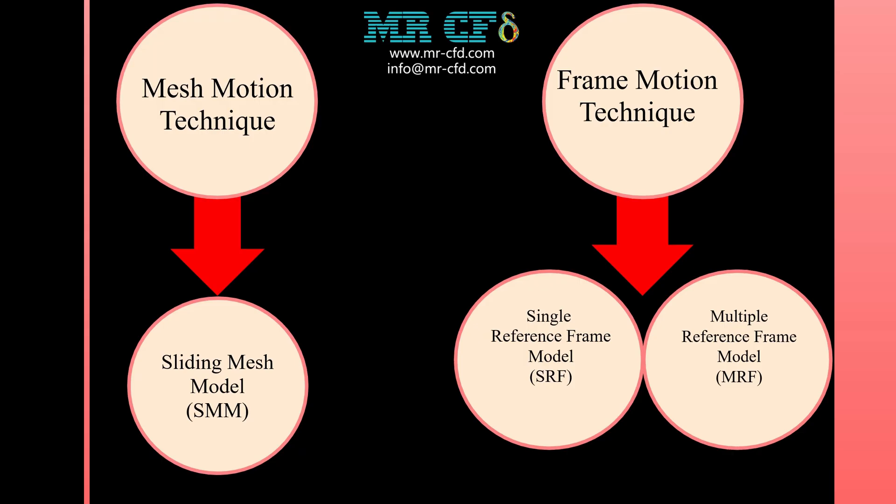The two most important computational methods for simulating rotary turbo machines are frame and mesh motion techniques. The frame motion technique is categorized into two submodels — SRF and MRF — which are more economical in terms of computational cost than the mesh motion technique. However, the downside is that inherent unsteady terms due to the rotation of impellers are neglected. To overcome this, the mesh motion technique can be used, but it comes with the penalty of high computational cost. Additionally, when mesh motion is used, a mesh interface must be defined between rotating and stationary domains to allow for the sliding of mesh cells.